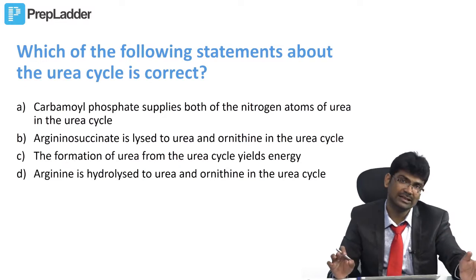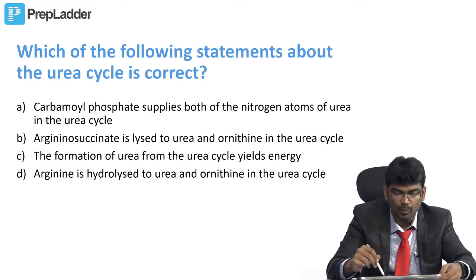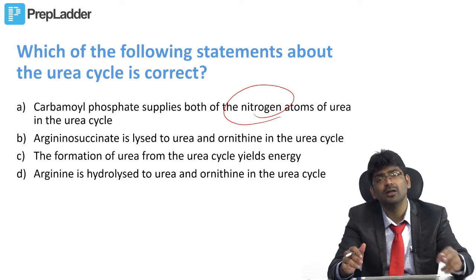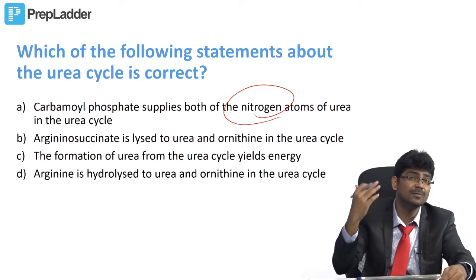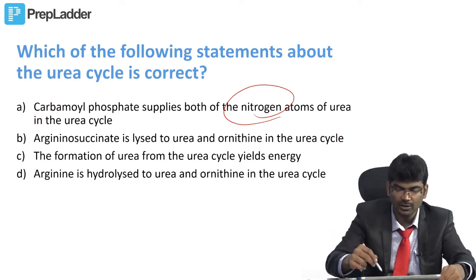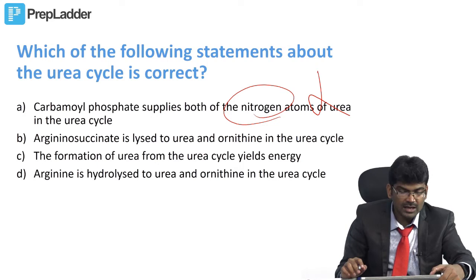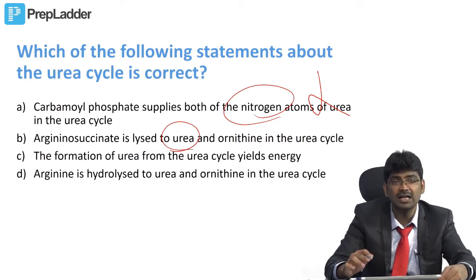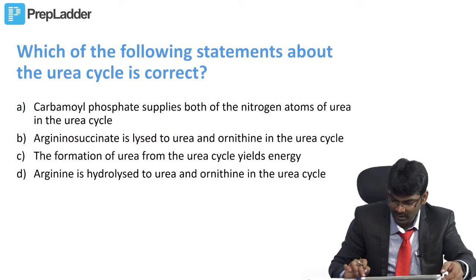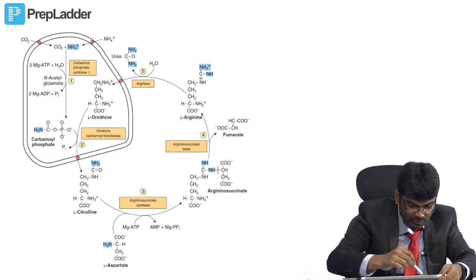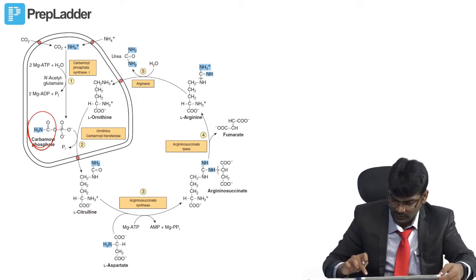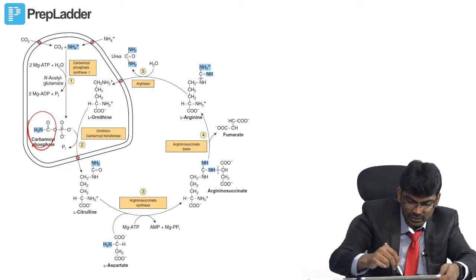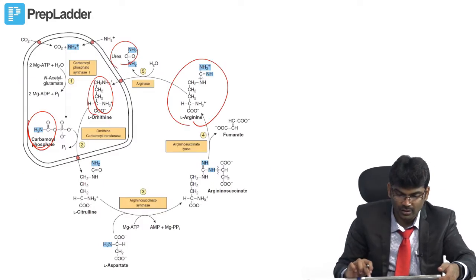Which of the following statements about the urea cycle is correct? Carbamyl phosphate supplies both nitrogen atoms of urea — wrong, carbamyl phosphate provides only one nitrogen; the other nitrogen comes from aspartate. Argininosuccinate lyase produces urea — wrong, it is arginine that is cleaved to urea and ornithine by arginase. Formation of urea from the urea cycle yields energy — this is also a wrong statement.